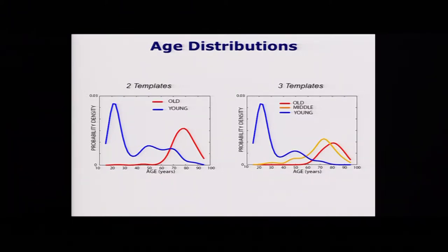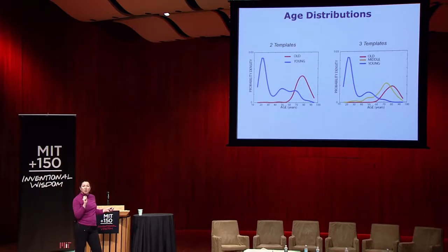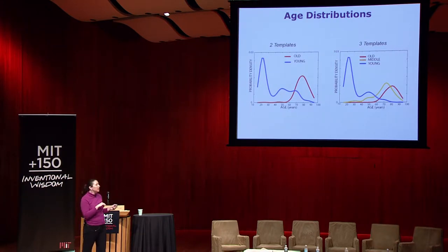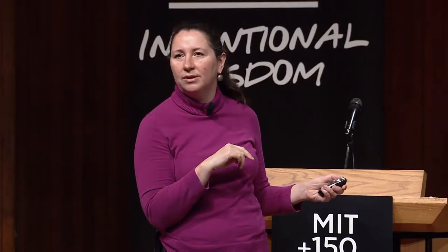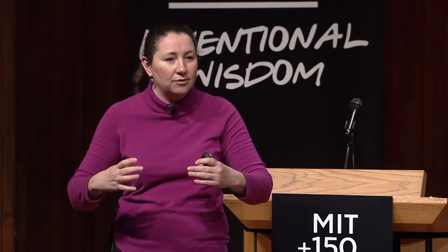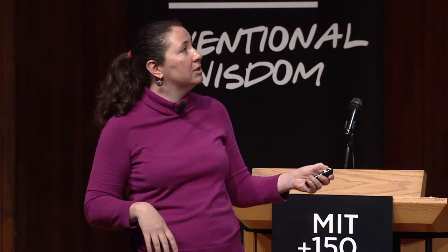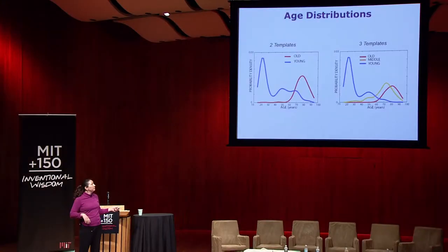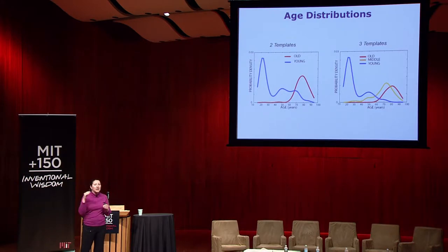If we allow more richness and ask for three templates, the model doesn't distribute them uniformly — it focuses on the advanced stage. On top of the structure discovered in images without any outside information, you can start asking questions. What about Alzheimer's disease? It turns out there is twice the chance of having Alzheimer's if you are in the red cluster rather than in the yellow cluster. So suddenly we're starting to see how demographics and clinical populations correlate with the structure in the images, by reducing variability within each subpopulation.